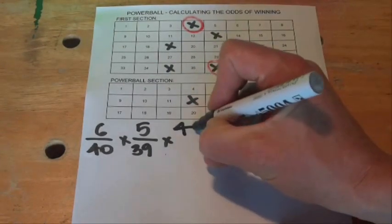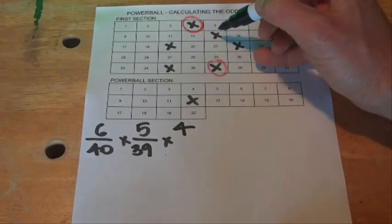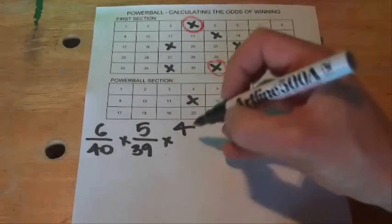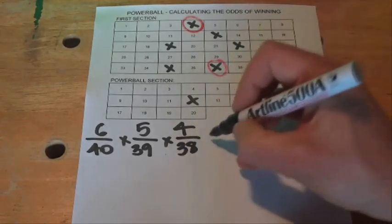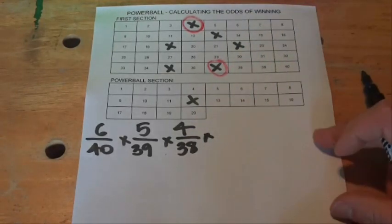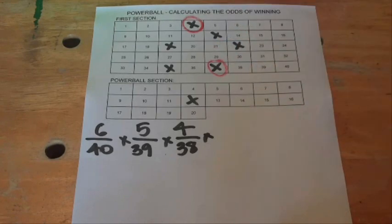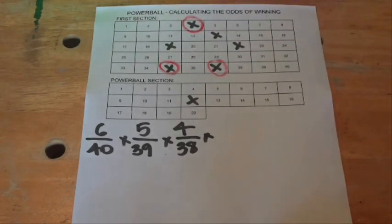So then the third number comes down, one, two, three, we've got four chances left out of the 38 balls left in the drum to be selected. And so we'll circle one of those as being a winning number.